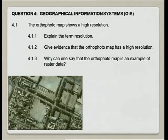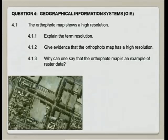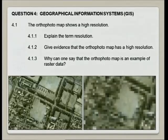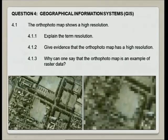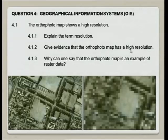Give evidence that the orthophotomap has a high resolution. Because we can see individual features here. It consists of many, many pixels, and the pixels must be very, very small. So if it was not a high resolution, the orthophotomap would have shown just individual pixels — very unclear and not a sharp image. Just because we can identify individual small geographic features, it gives us the ability to work with it, and therefore it's classified as a high resolution image.